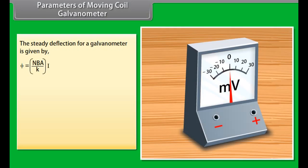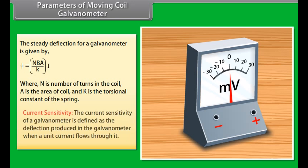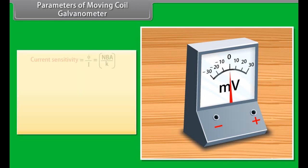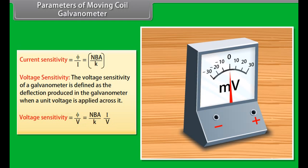Parameters of moving coil galvanometer: The steady deflection is given by phi = (NBA / K) × I, where N is the number of turns, A is the area of coil, and K is the torsional constant of the spring. Current sensitivity is defined as the deflection per unit current: phi/I = NBA/K. Voltage sensitivity is the deflection per unit voltage applied across the galvanometer: phi/V = NBA·I / (K·V).